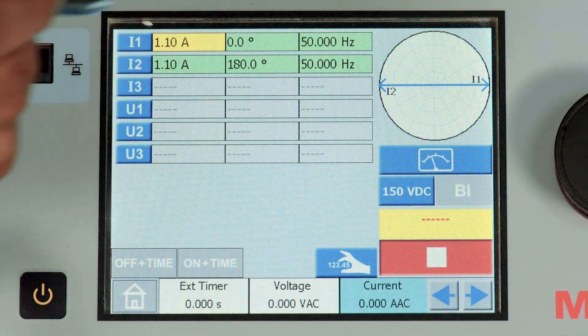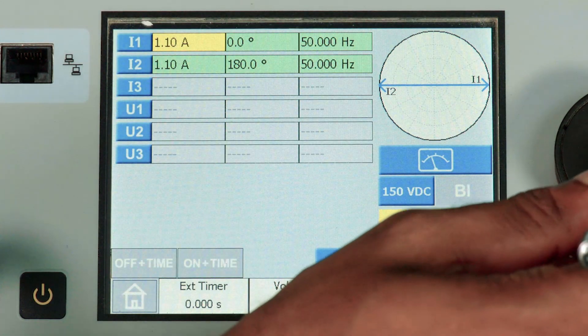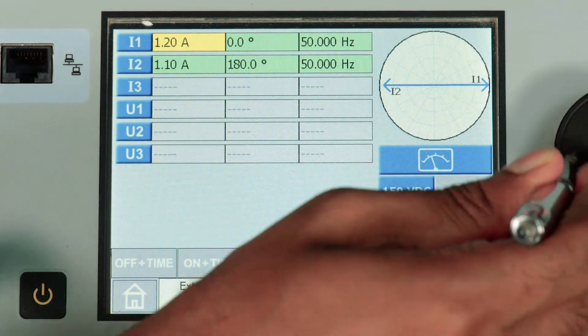By gradually increasing any one of the current, by rotating the knob, we can observe the tripping.